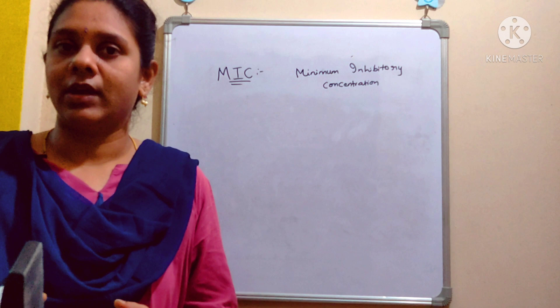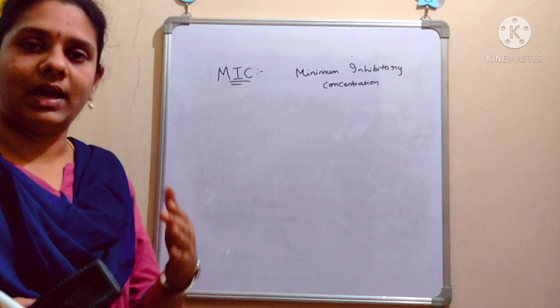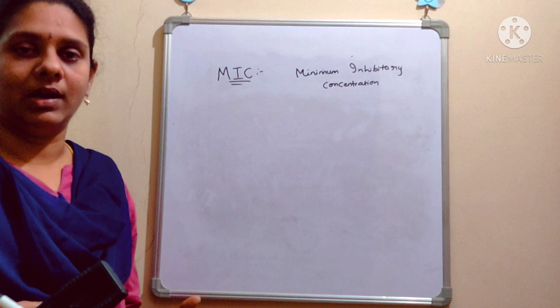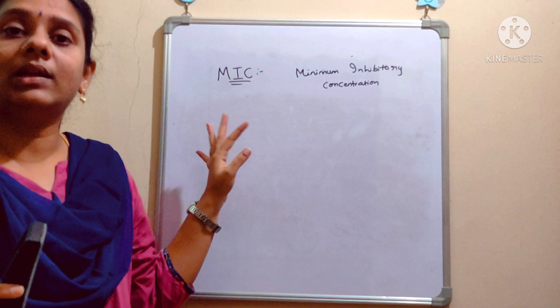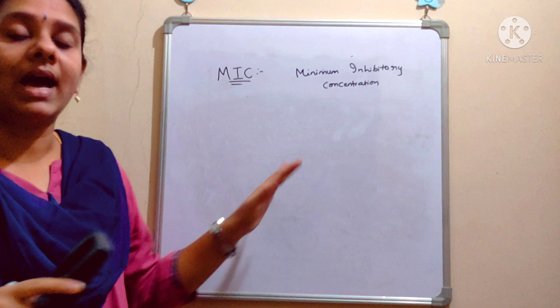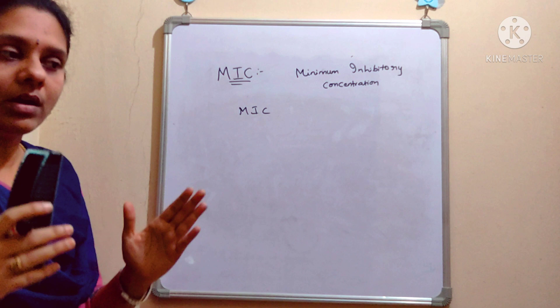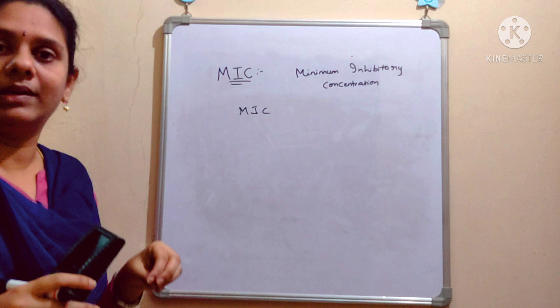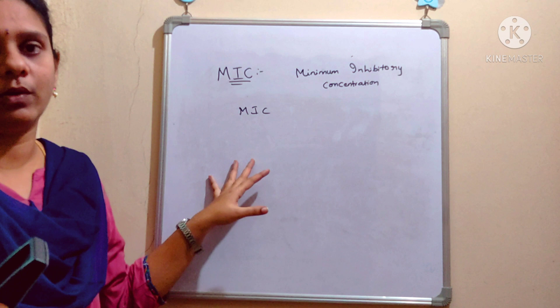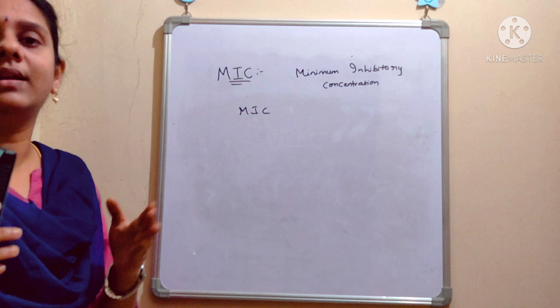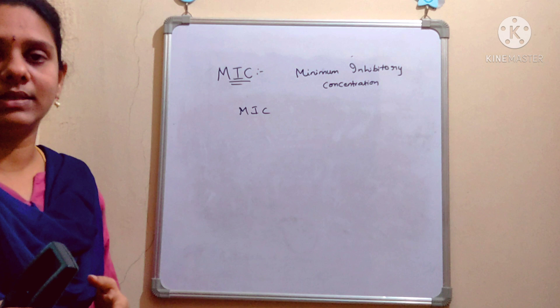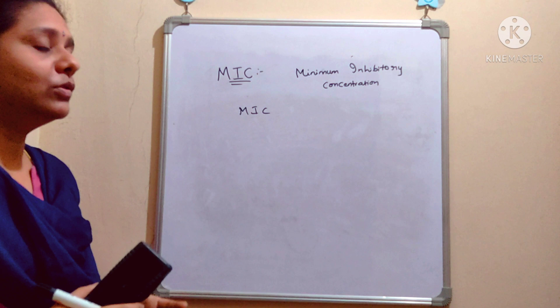If we want to define MIC: in this experiment, we take different concentrations of antibiotic — from the highest to the least concentration. We then screen at what concentration the drug inhibits the growth of the pathogen. That value will be considered as the MIC value of that particular drug — the minimum or least concentration of the drug that inhibits organism growth.